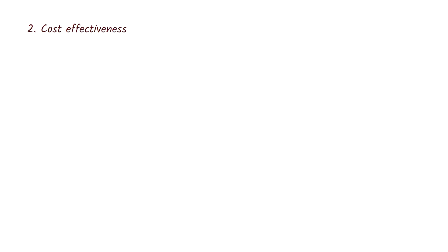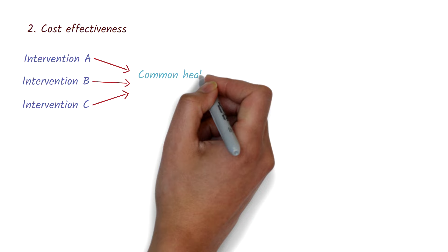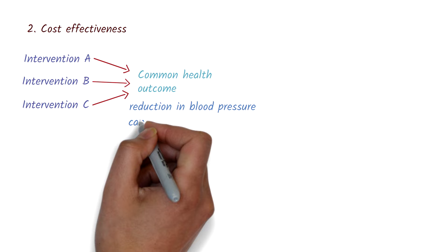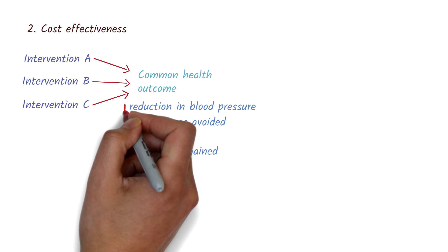The second type of analysis is a cost-effectiveness analysis. This is used when we're comparing different interventions that have a common health outcome. Examples of health outcomes are reduction in blood pressure, cancer cases avoided, kilos lost, or life years gained. These are called natural units.